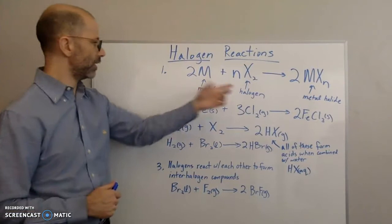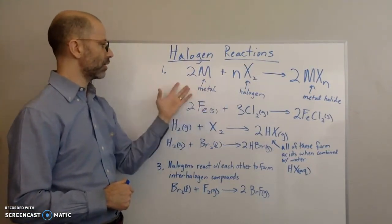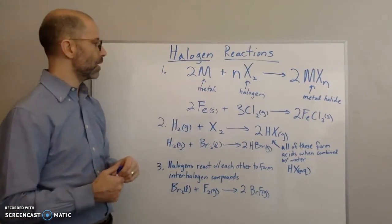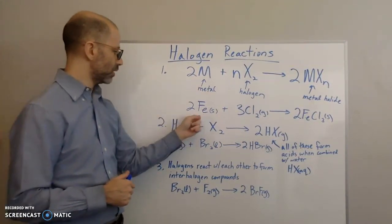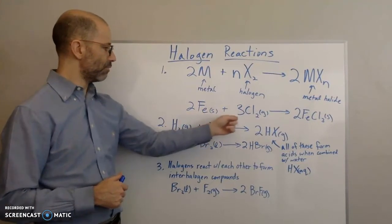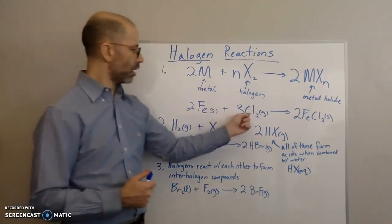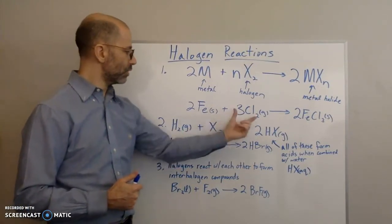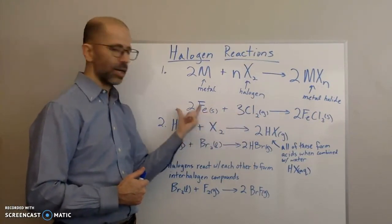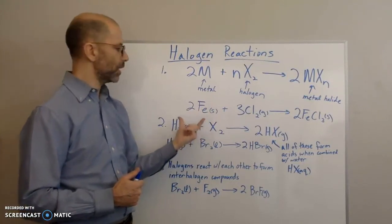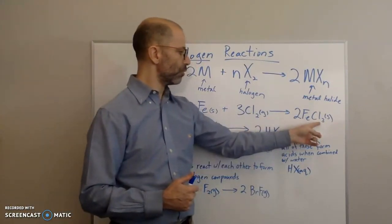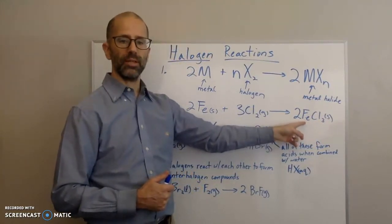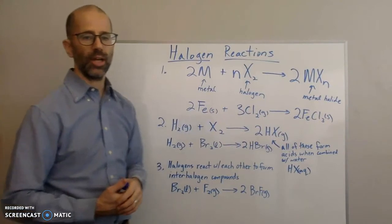But halides will react with different metals, and depending on the metal, it could have a certain charge. For example, if you have iron and three moles of chlorine, the chlorine will react with the metal to make a compound with three chlorines for every one metal, meaning the iron will have a three-plus charge.